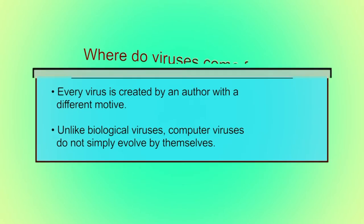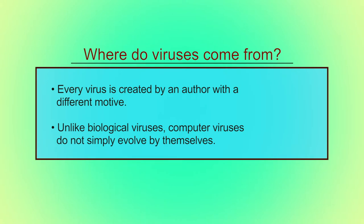The question arises: where do these viruses come from? Basically, a virus is a malicious code designed by an individual with the motive to create problems and troubles for others. Some people create viruses and malware because they enjoy causing trouble and making others suffer. Biological viruses are created on their own, but computer viruses are deliberately created by programmers or people.